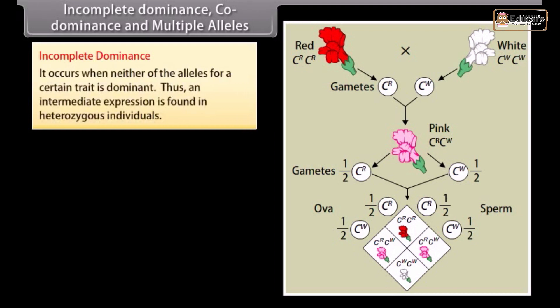Incomplete dominance, codominance, and multiple alleles. Incomplete dominance: It occurs when neither of the alleles for a certain trait is dominant, thus an intermediate expression is found in heterozygous individuals.